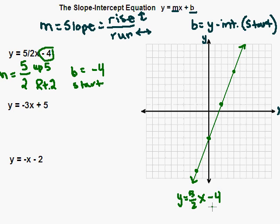So again, we started at negative 4, and then we applied our slope — 5 over 2. We went up 5 to the right 2, up 5 to the right 2.